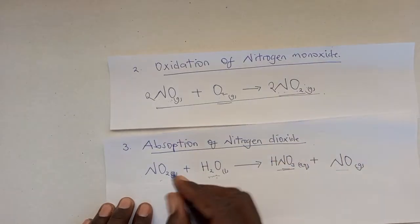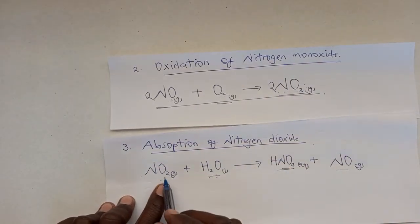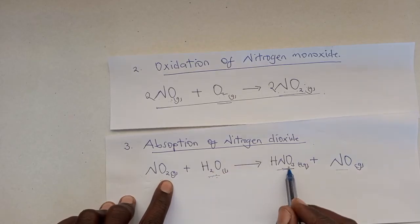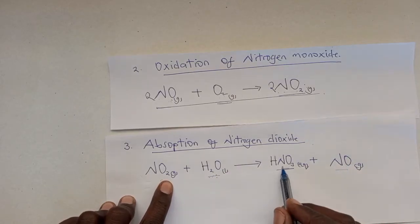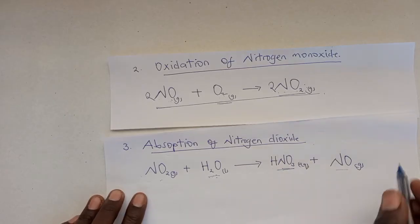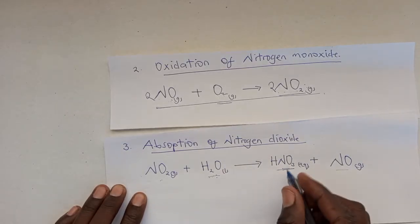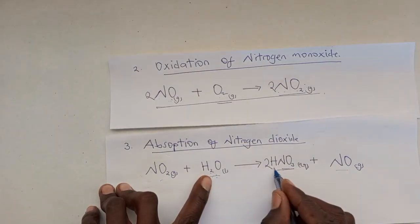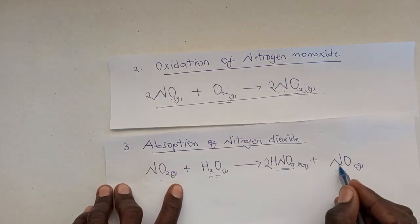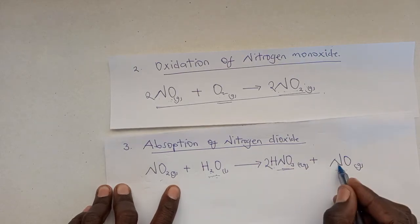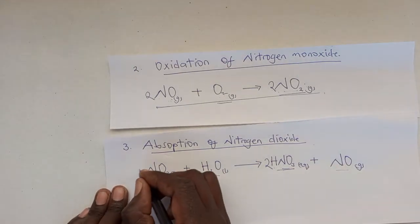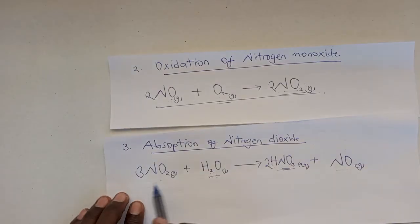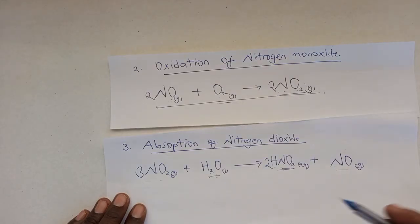We need to balance this equation. We have three atoms of oxygen, four atoms of oxygen, two atoms of nitrogen. To balance this easily, we add a 2 here because we have two hydrogen atoms. We now have 2+1, giving us three atoms of nitrogen, so we add a 3 here: 3NO2(g) + H2O(l) → 2HNO3(aq) + NO(g). This is how nitric acid is produced.